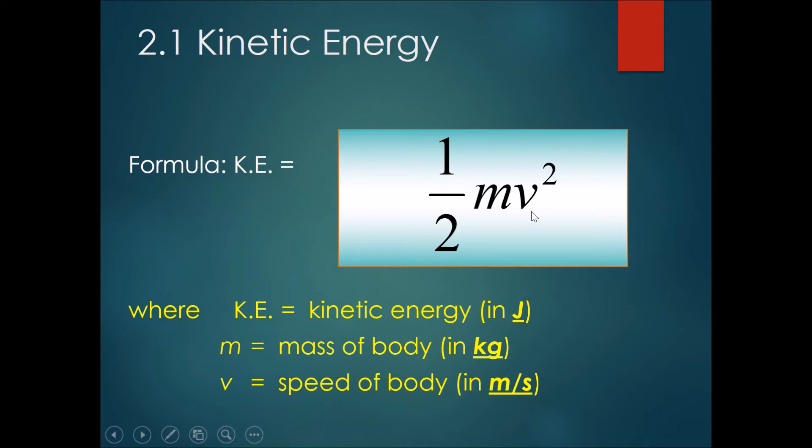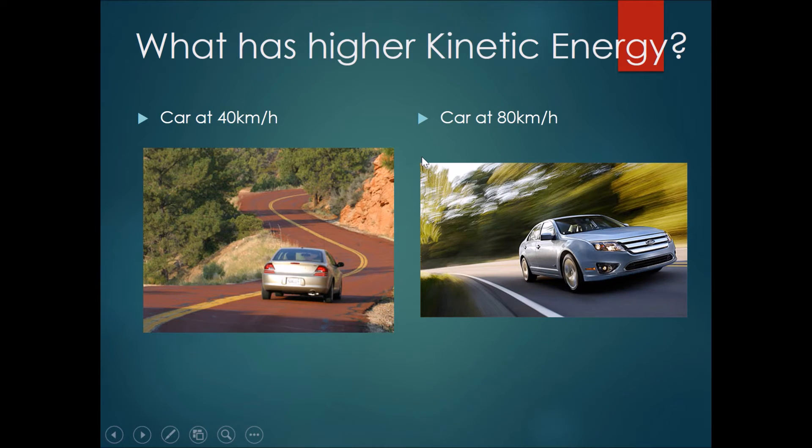In calculations, solve v squared first, then multiply it with m and then by half. The square here refers only to the speed. Let's give it a go.